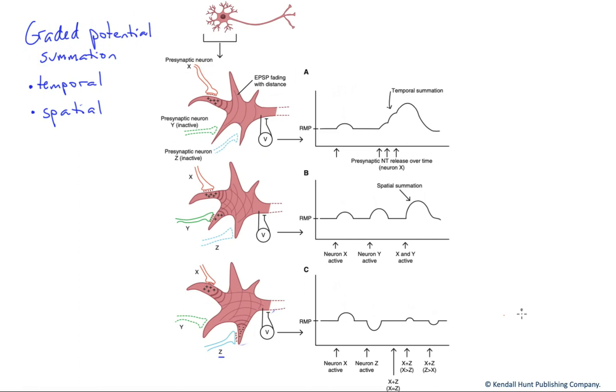In this video, we're going to talk about graded potentials and their ability to be additive on target neurons. In this case, the target neuron here being this larger one in pink. And what we have in our artificial scenario here is presynaptic neurons that are synapsing on it. So that's one way in which graded potentials can be generated.